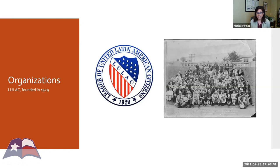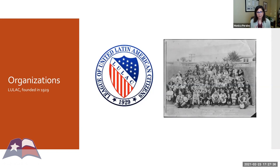LULAC lawyers filed a number of legal cases against segregation in public schools, including Mendez v. Westminster in California in 1946 that ended segregation in California, and also various cases in Texas including the Delgado v. Bastrop case in 1948. In the 1950s, it was LULAC lawyers that filed the case that became Hernandez v. Texas, which challenged discrimination against Mexicans in jury selection — the first case argued by Mexican American lawyers before the United States Supreme Court. Although they emphasized citizenship, Hernandez v. Texas showed how legal whiteness afforded to people of Mexican origin really didn't prevent systemic discrimination and disenfranchisement.